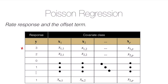Now suppose individual three was observed for one month and individual one was observed for one year. That information matters: individual one had a longer exposure period — a longer period of time for hospitalization to occur — than individual three. So it shouldn't be surprising that individual one was unfortunately hospitalized three times; we had a longer period of time to observe them.